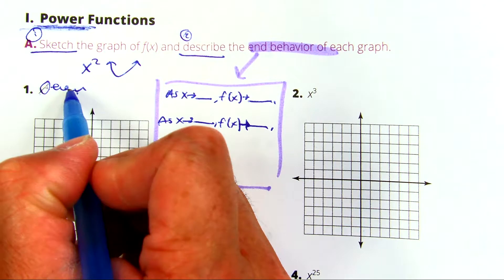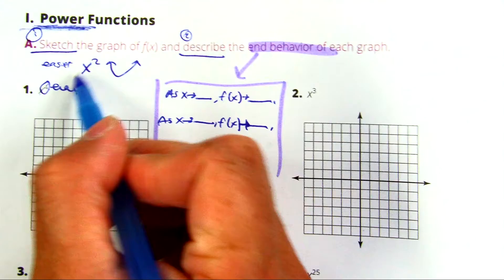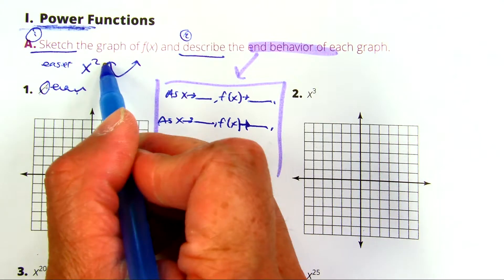Even degree, the easiest one we know is x to the second. It's just a parabola, starts up, ends up.